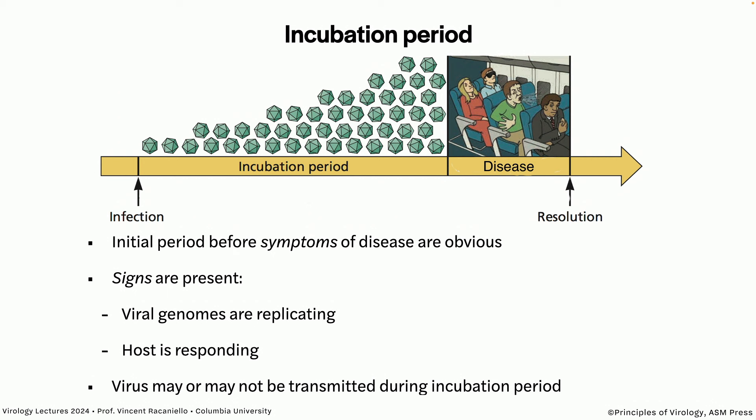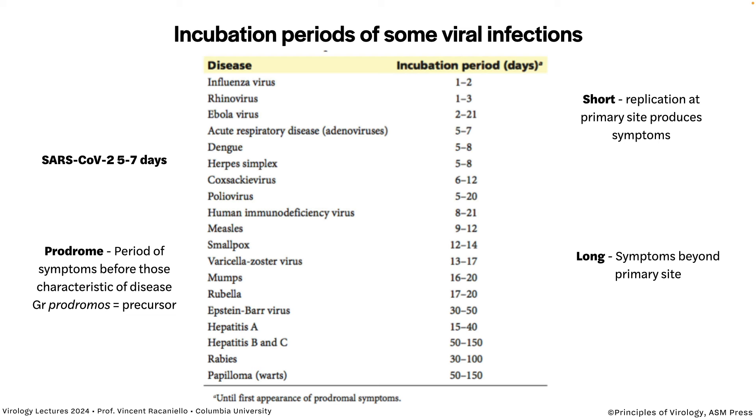A student asked whether there's a set period to ask about travel history. The answer is it depends on the virus. Incubation periods range from one to two days all the way to 50 to 100 days. So it depends on the disease. You take a history and if someone says they've been in Nigeria, you should know — especially as a medical professional — what's going on in the world.